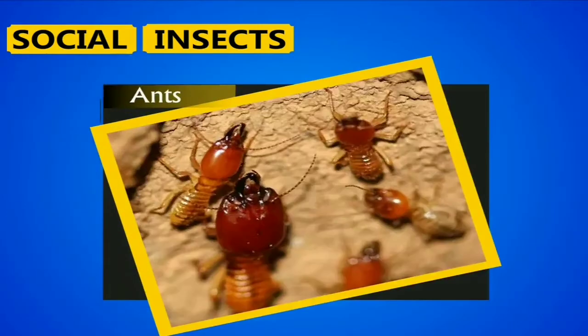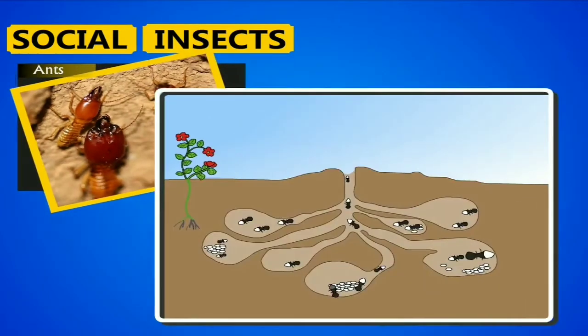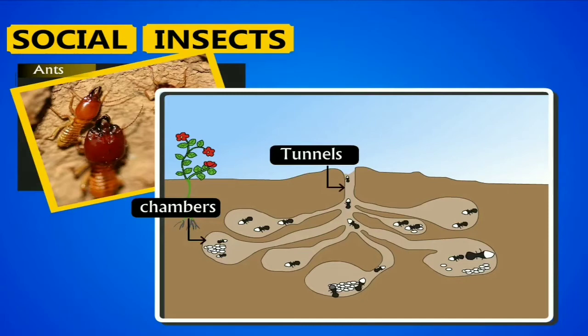Ants are social insects. They have an excellent ability to live together and manage a colony well. They build an underground nest where they live. An ant colony is connected to each other and to the surface of the earth by small tunnels. There are rooms for nurseries, food storage, etc.